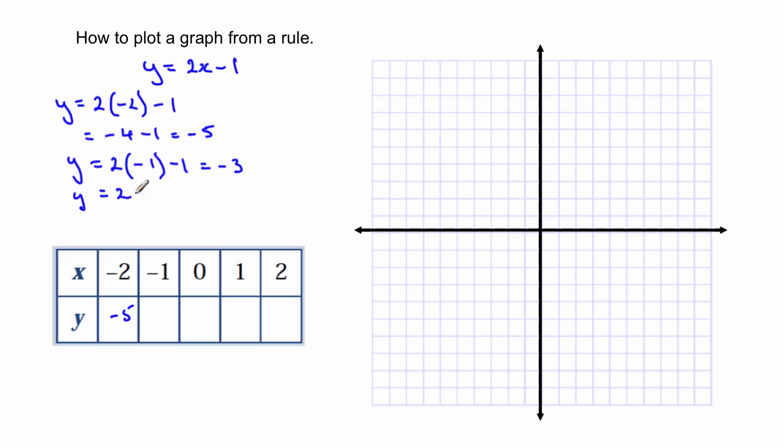We'll do the next one. There's a 0 minus 1. So it's always the same rule, you just replace the x value. Two lots of 0 is 0 minus 1 is minus 1. Let's put these other ones in.